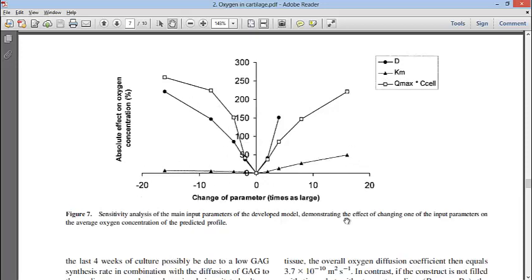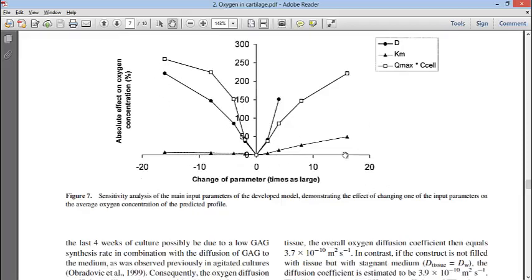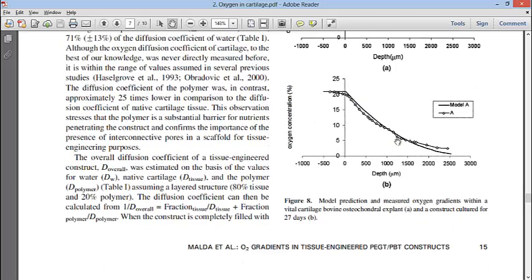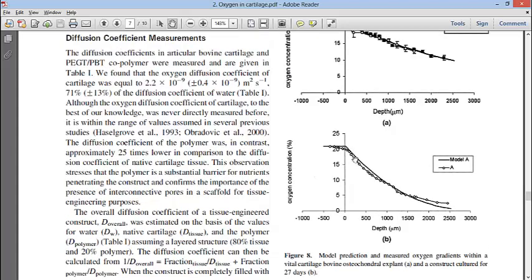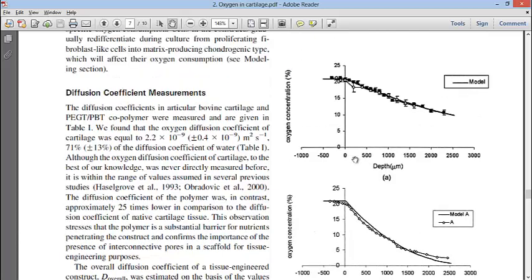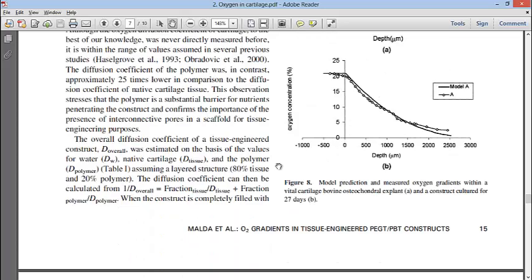They also gave an idea of the overall effect that each variable has on the equations. Depending on the parameter, you could adversely affect the equation and the calculation by the mathematical model. Here we have a construct that was cultured for 27 days. The solid line is the model, the connected dots are the measured concentrations of the oxygen.